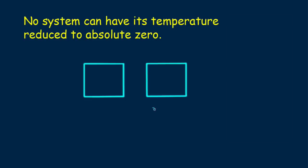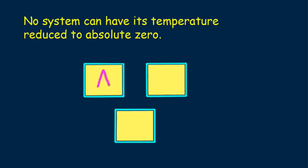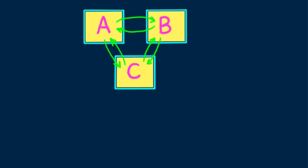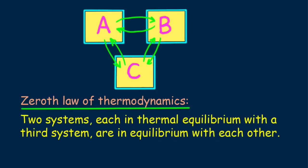There is a zeroth law of thermodynamics which states that if systems A and B are each in thermal equilibrium with system C, then systems A and B are in thermal equilibrium with each other. Thermal equilibrium means no spontaneous net flow of heat in either direction. We say, two systems, each in thermal equilibrium with a third system, are in equilibrium with each other.